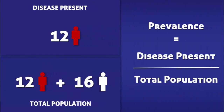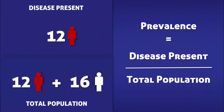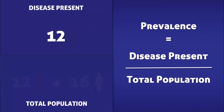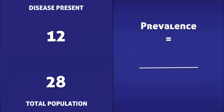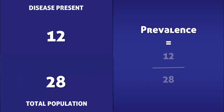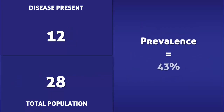We can now calculate the prevalence by dividing the number of people with the condition by the total number of people in the population. So by dividing 12 by 28, we find that the prevalence of the condition in this cohort is 43%.